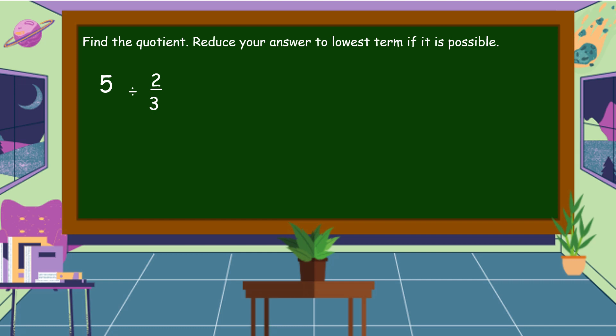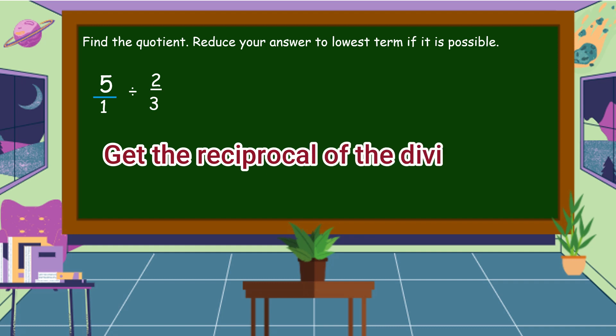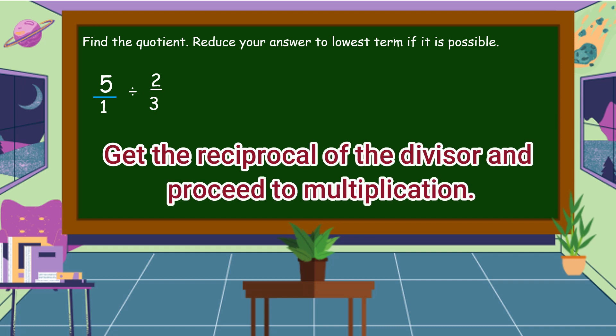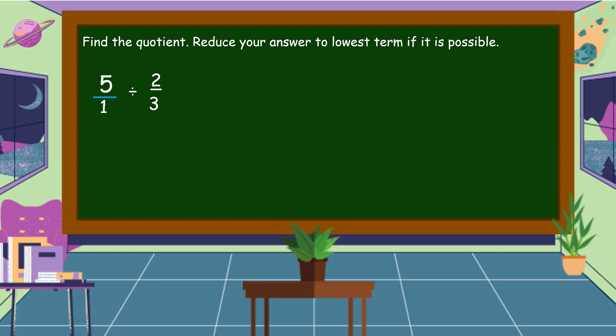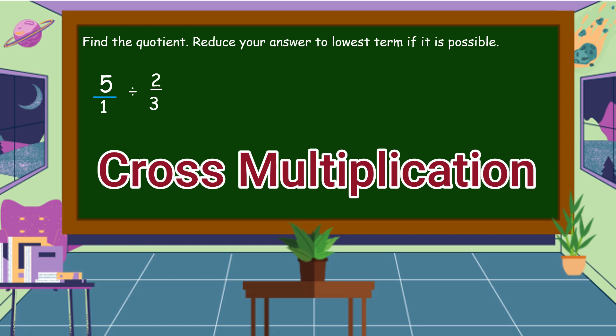Lalagyan natin ng denominator na one ang ating whole number na five. So, five over one. Ang usual process natin kung paano tayo mag-divide ng fraction by another fraction is we are going to get the reciprocal of the divisor — yung pangalawang fraction, babalikta rin natin. Instead na two-thirds, ito ay magiging three over two. Pero dito sa ituturo ko sa inyo, hindi na natin babalikta ang two-thirds. Instead, gagamitan natin ng cross multiplication. Pariho lang naman ang sagot nun.